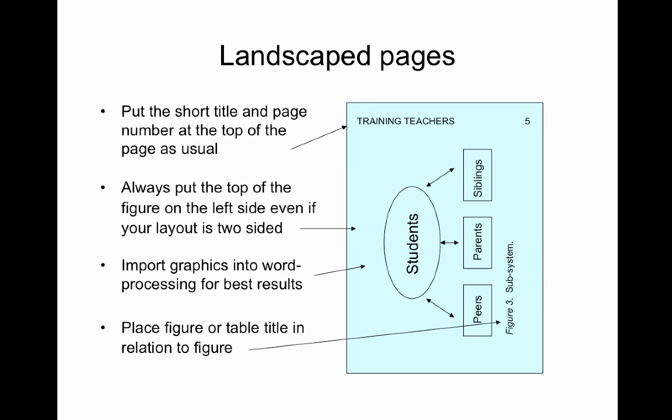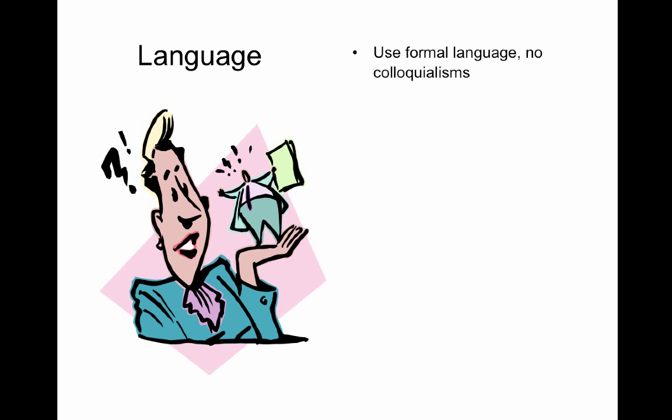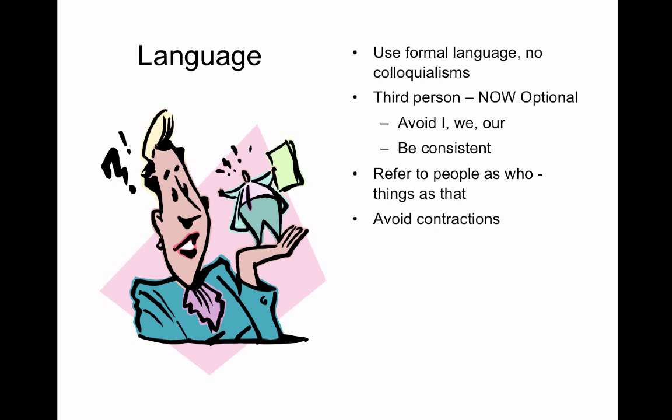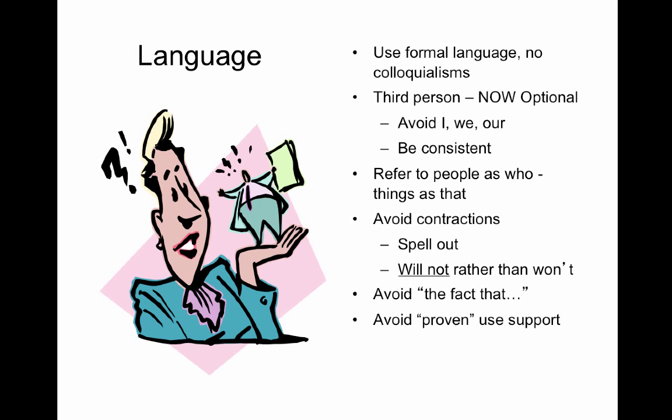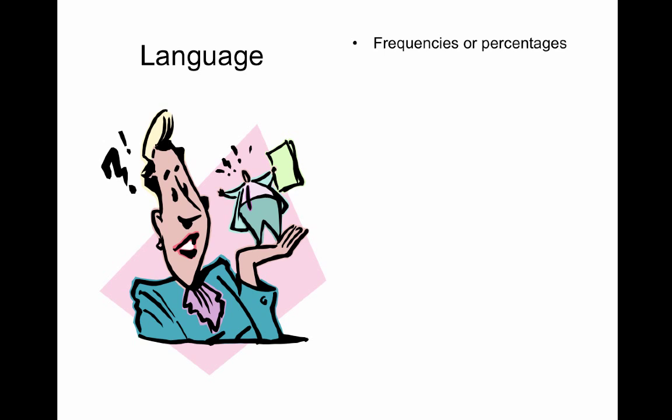Language: use formal language, no colloquialisms. If you choose to use third person, which is now optional, avoid I, we, and our, and be consistent in its use. Refer to people as who and things as that. Avoid contractions — spell out will not rather than use won't. Avoid the phrase the fact that — it's wordy and often not true. Avoid the word proven; instead use support. Use past tense when reporting results. With frequencies or percentages, use frequencies in groups of less than ten and percentages with larger groups.